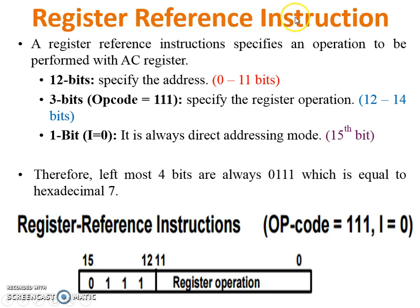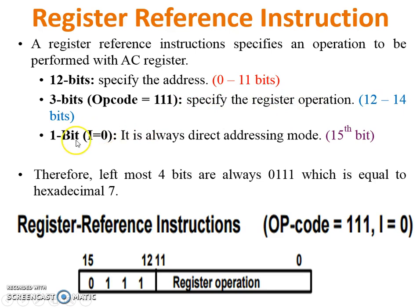Next, Register Reference Instruction. A register reference instruction specifies an operation to be performed with the accumulator register. The first 12 bits, 0 to 11, specify the address. The next 3 bits from 12 to 14 are always 1, 1, 1, specifying the register operation. The last bit, i, is always 0, so it works on direct addressing mode. Therefore the leftmost 4 bits are always 0, 1, 1, 1, which equals hexadecimal 7.